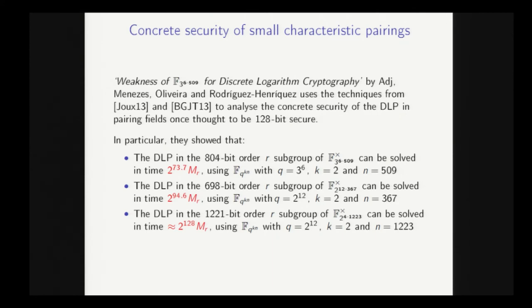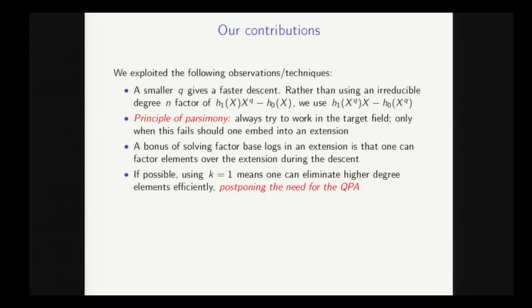So we looked at this, and we came up with a few observations and techniques and principles. And basically, our contribution in this paper is to give a plan to follow if you want to attack a given DLP. And we're not saying these are the optimal ones, but they're certainly better than the ones that were there before. So the first one is that if you look at the classical descent and the L1/4 descent, a basic property is that if you use a smaller q in your field representation, then you get a faster descent. And if you use the original field representation, which basically means finding an H0 and an H1, which are defined over Fq to the k. So this first polynomial here, H1(X) times X to the q minus H0(X), has an irreducible degree n factor.